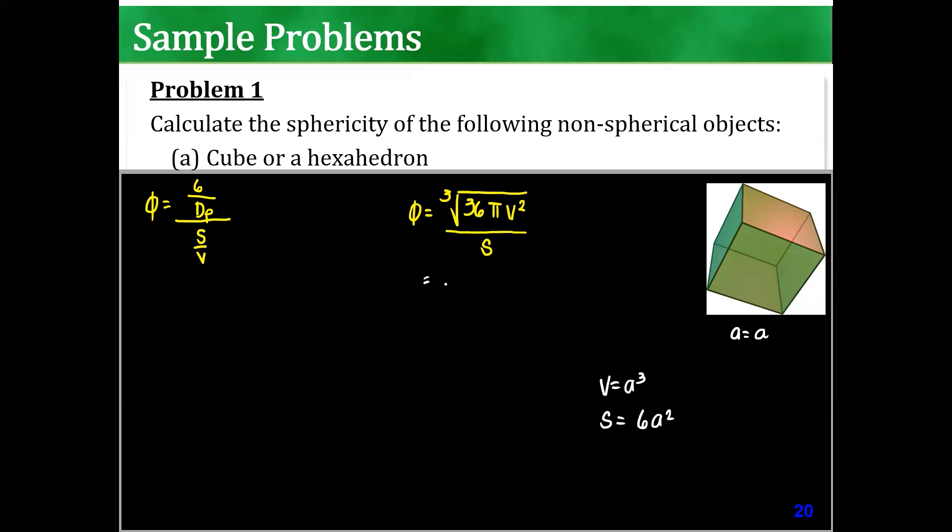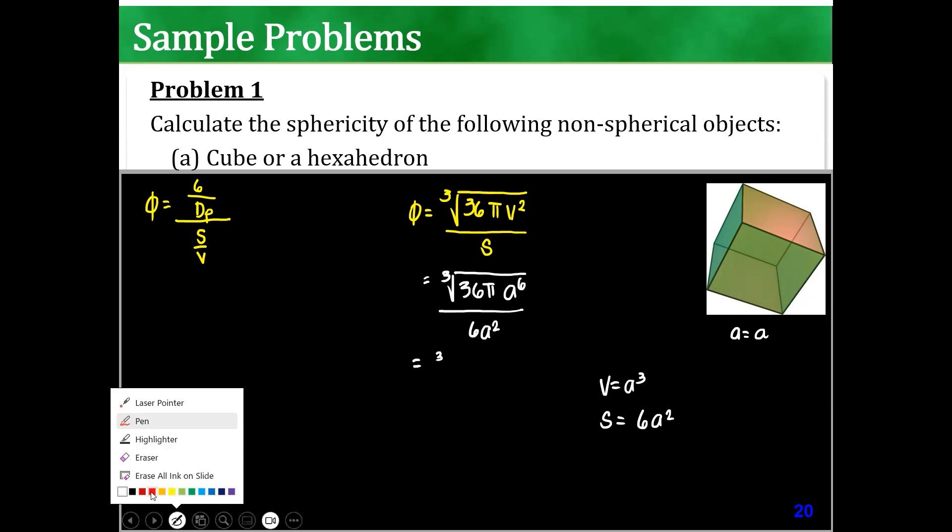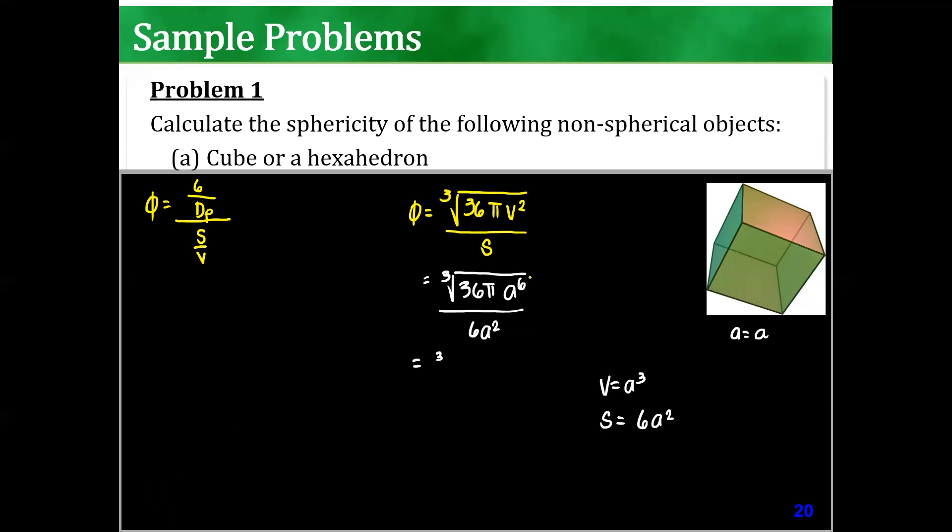That means this one is the cube root of 36 pi and then V squared. So that's A to the 6 over 6A squared. So you can cancel out the A to the 6. It becomes A squared when you bring it out of the cube root. So it cancels out with the A. All you have is the cube root of 36 pi over 6. Can you please calculate this for me? What's the answer?